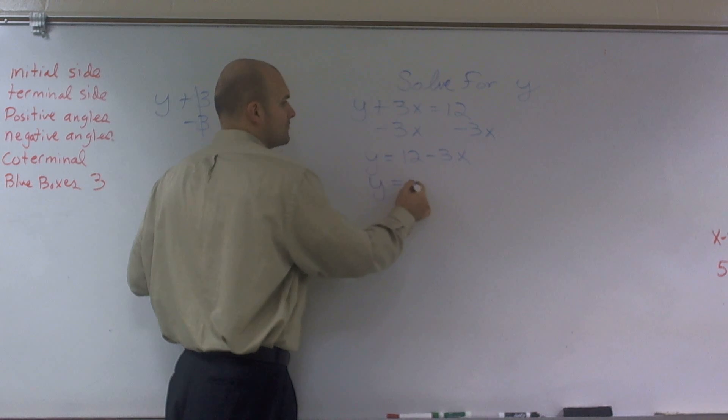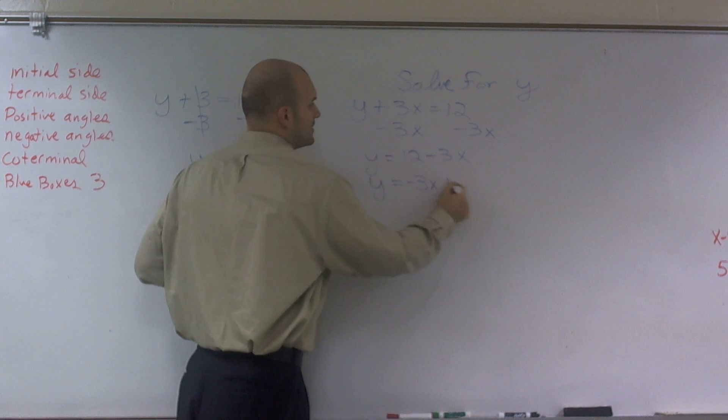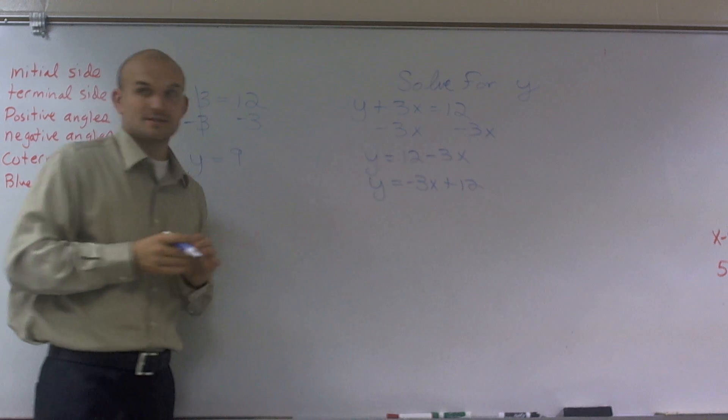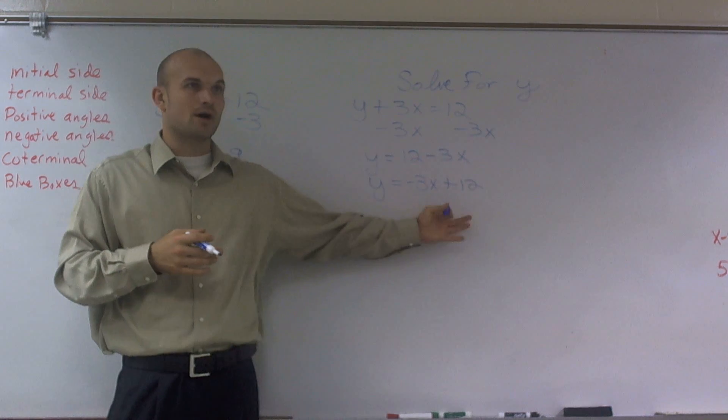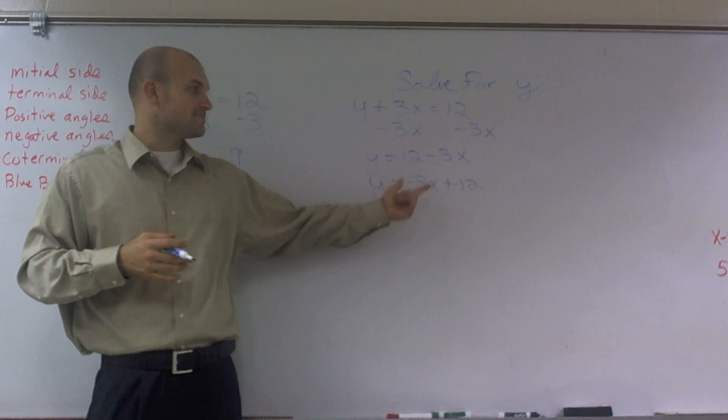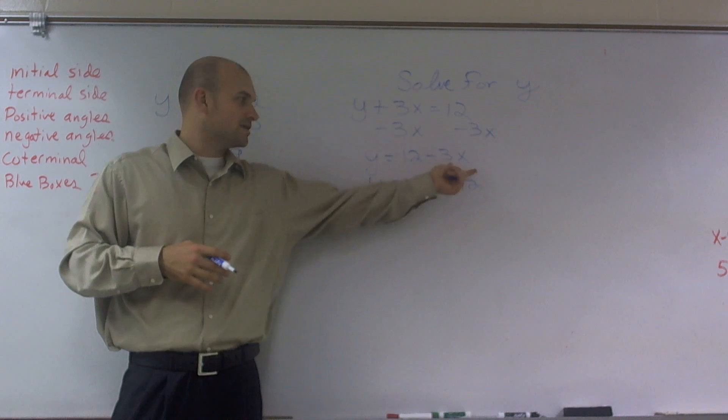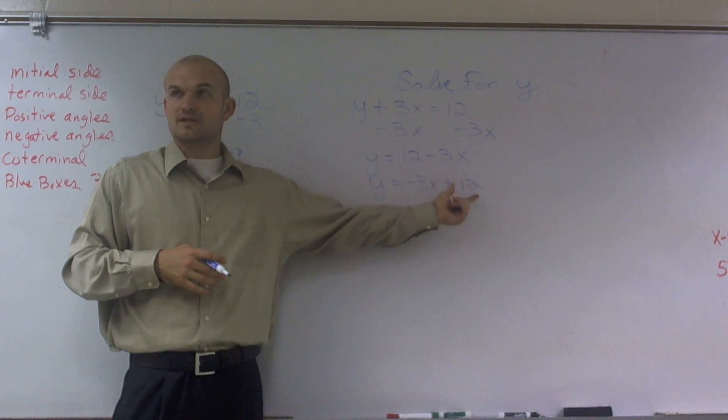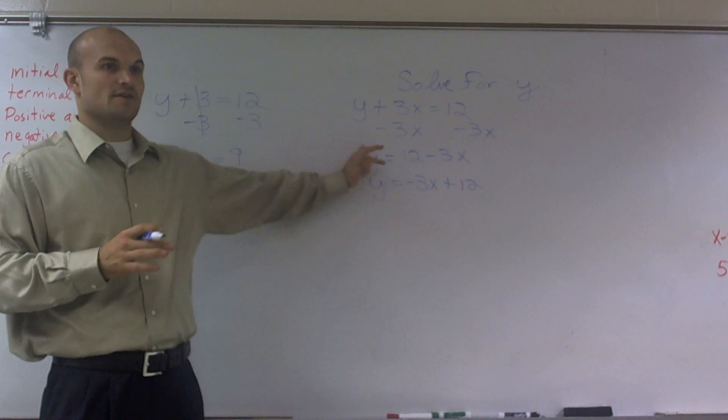So you guys should all remember that. So y equals 12 minus 3x. However, I'd like you guys, from now on, to get into the habit of writing an equation like this: y equals negative 3x plus 12. Just always make sure you guys put your variables, your term with the variable in front of the constant.